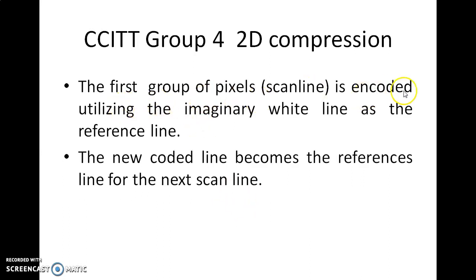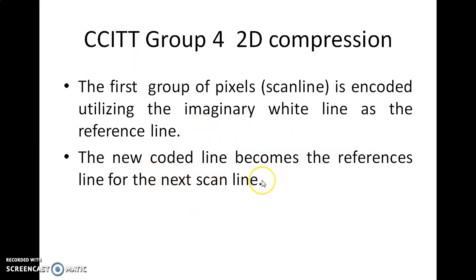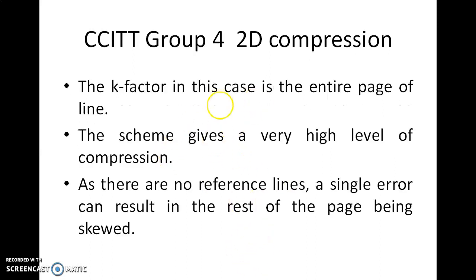The first group of pixels is encoded utilizing this imaginary white line as the reference line. All group pixels are encoded based on the imaginary line, and the newly coded line becomes the reference for the next scan line. The K factor in this case is effectively the entire page.